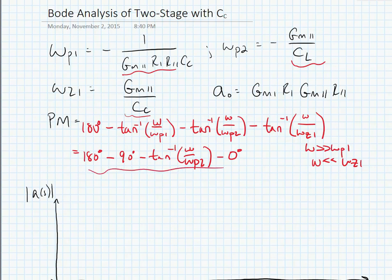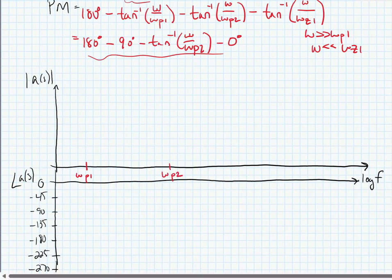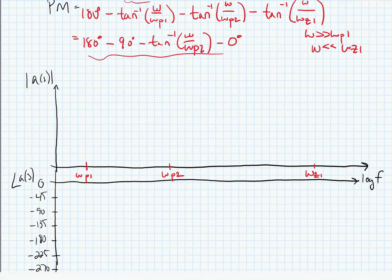Let's look at a Bode plot of this particular scenario. We have a dominant pole omega p1 that we'll put close to the y-axis, we have a second pole frequency omega p2, and then we have a zero frequency at a much higher frequency. Let's plot our frequency response. We know that our magnitude response is going to start at a value of gm1 gm2 times r1 times r2.